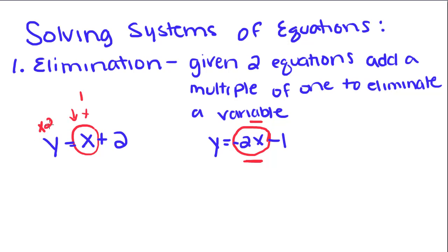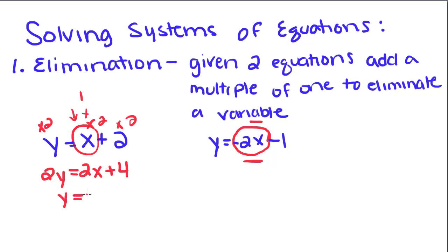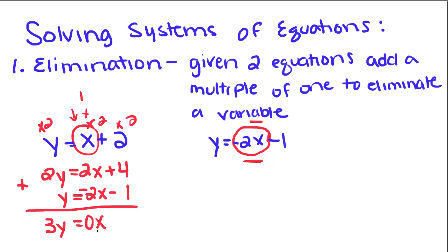So we're going to multiply this whole equation by 2 — multiply everything by 2 — and we get 2y equals 2x plus 4. We don't do anything with the other equation. Now we write this equation right underneath it and add the two equations together. So 2y plus y gives you 3y, and 2x plus negative 2x gives you 0x, and 4 plus negative 1 gives you positive 3.